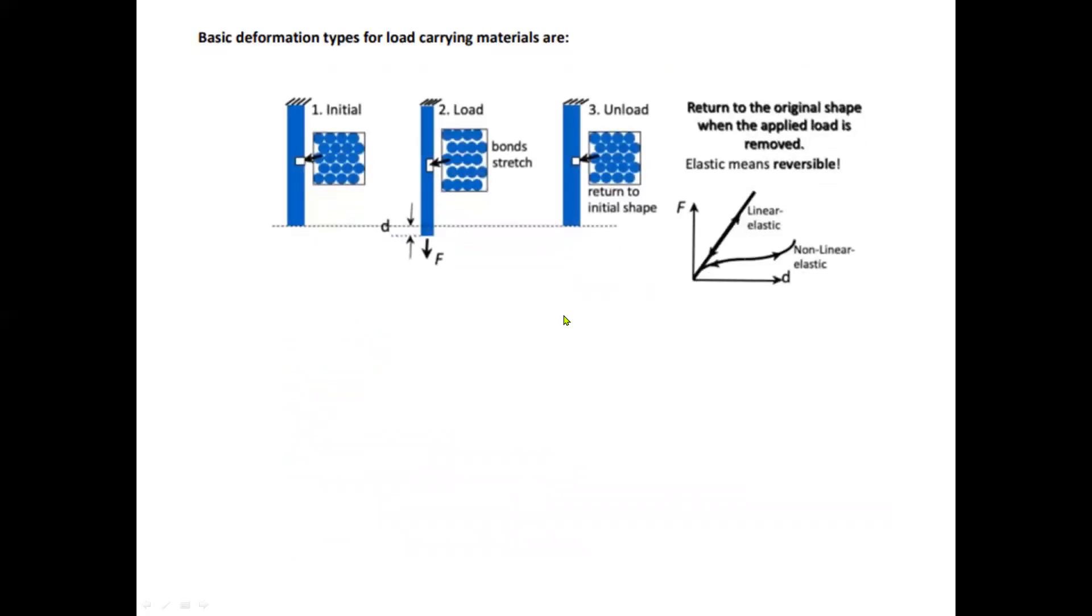The basic deformation types for load carrying materials are the following. First we have the initial, the loading, and the unloading. This figure shows the return to the original shape when the applied load is removed. Elastic means reversible. Elastic deformations are instantaneously recoverable. Elastic materials return to the original shape when the applied load is removed.